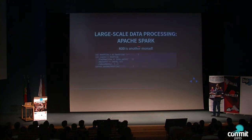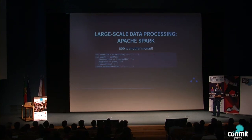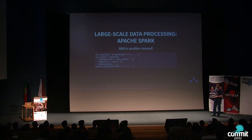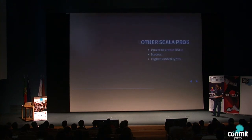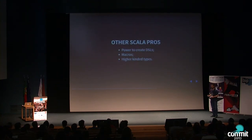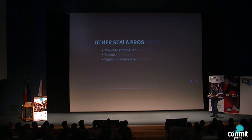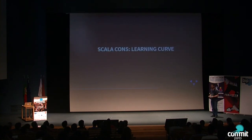Apache Spark is also a good example of concurrency in Scala, because it supplies the RDD primitive, which is another monad. You can do map-reduce using the flatMap and map operations we've seen applied to monads. Those are all the Scala pros I wanted to cover.